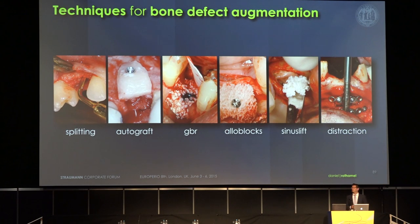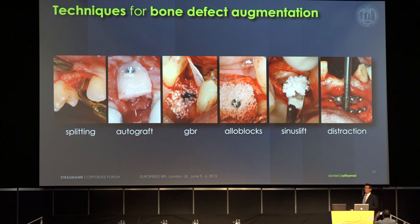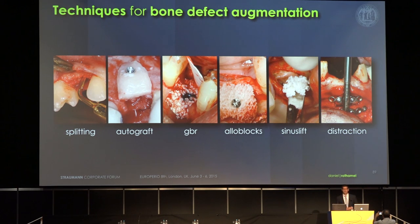What techniques do we have today? We can do expansion techniques like splitting techniques using piezo surgery; we have autografts and GBR techniques; nowadays it's very common to use alloblocks especially for larger defects; sinus lift procedures for the lateral maxilla; and distraction osteogenesis. We want to focus today on a few of these different aspects, like autografts for example.